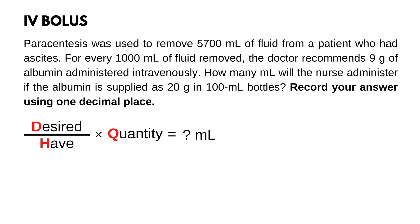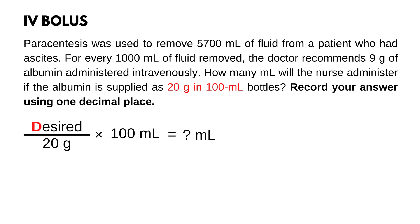Now that the formula is organized, we are going to plug in the numbers. Start with half and quantity, because they are usually given to you and they come together. For this problem it is 20 g in 100 mL. For desired, you will plug in the doctor's order, which is: for every 1,000 mL of fluid removed, the doctor recommends 9 g of albumin.